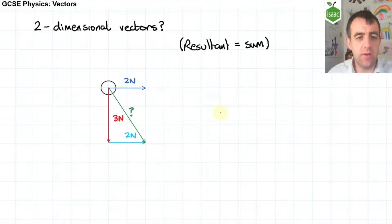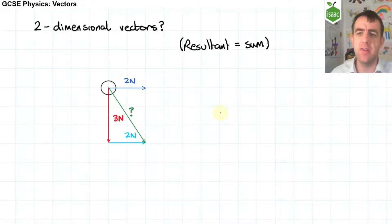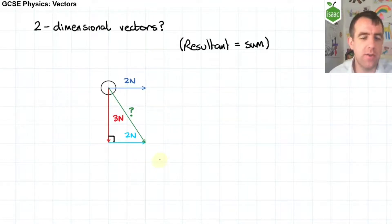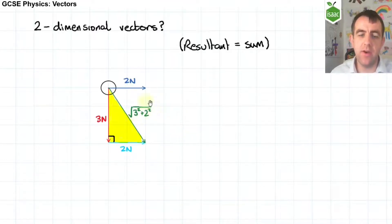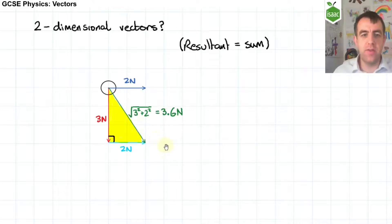If we're using a scale diagram, we can measure what that length is. So perhaps we use 1 centimetre is 1 newton, and we just measure how many centimetres long that resultant vector is, and we can use that to determine how many newtons the resultant vector is. But notice this is a right-angled triangle, and that means we can use Pythagoras. Pythagoras states that the square of the hypotenuse is equal to the sum of the squares of the other two sides. So the magnitude of the resultant vector in this case rounds to 3.6 newtons.